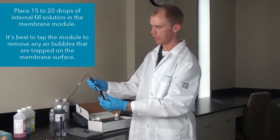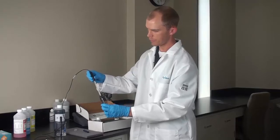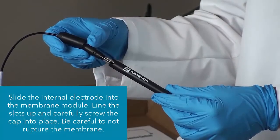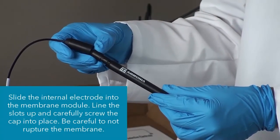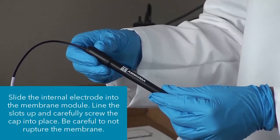Then you will line up the slots at the top of the electrode here with the slots on the membrane module itself, and then you will take the cap and screw it on.